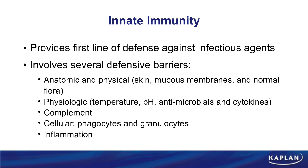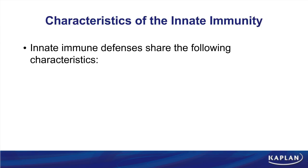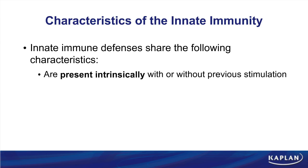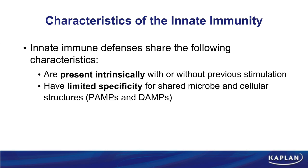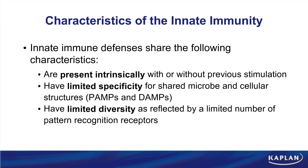Inflammation, sometimes viewed as a very bad thing, really is critical for the clearance of an infection. The characteristics of the innate immune response are both reflective of its strengths as well as its limitations. As a strength, it's always on — the term 'present intrinsically' says it's here, ready to go, just activate me, which is very important when trying to immediately respond to an infection. The innate immune response does have limited specificity; it is only capable of recognizing shared patterns or structures among different pathogens. Due to this limited specificity, you're also going to see limited diversity, as these cells have a limited number of receptors that recognize these different patterns.